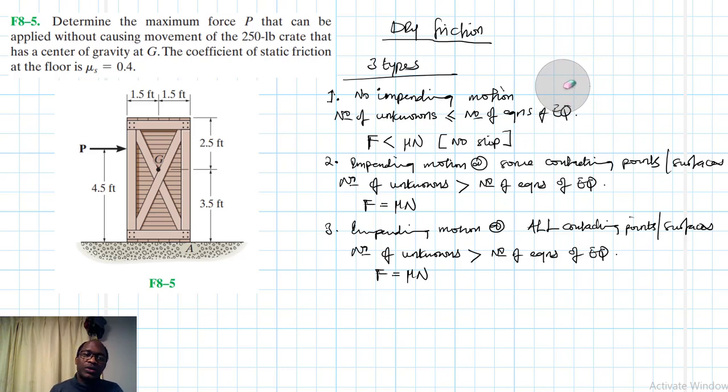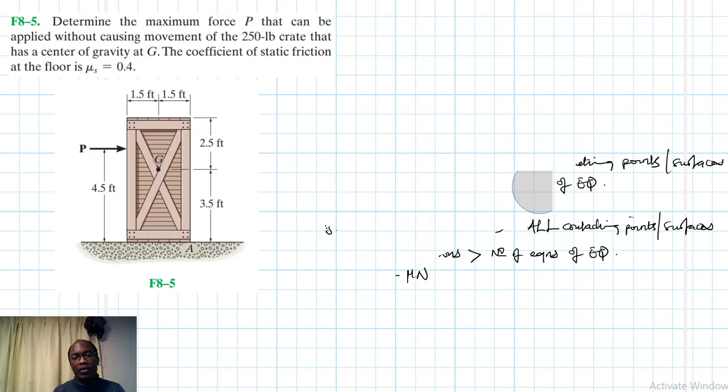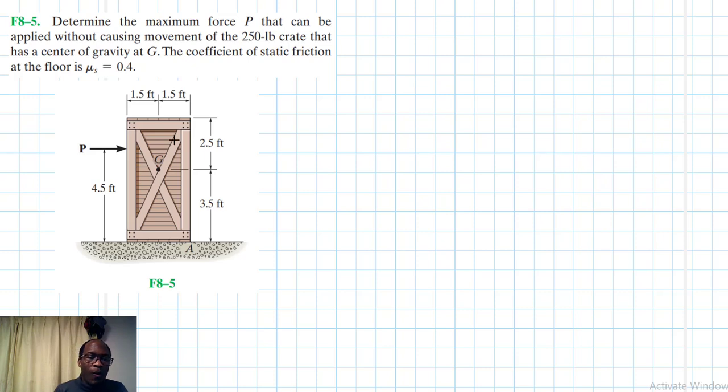So basically, these are the types that we are going to be looking at. So straight away, let's start solving. First things first, let's draw the free body diagram. We have the weight acting through the center of gravity G. And the friction has to be in the opposite direction of the applied force, because it resists the movement of the two contacting surfaces that slide relative to each other.